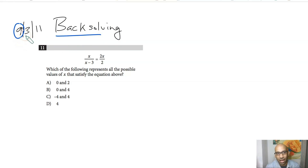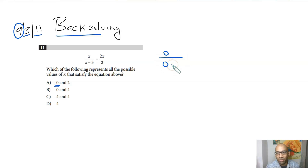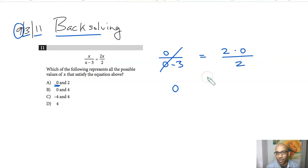In test 9, section 3, problem 11, you want to find which x values satisfy the equation. Start with answer choice A and try x equals 0. You get 0 over 0 minus 3, and 0 over any number is 0. The right-hand side is 2 times 0 over 2, which also equals 0. So 0 is indeed a solution.